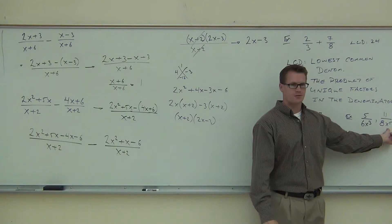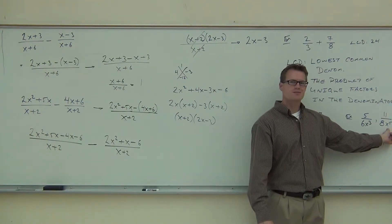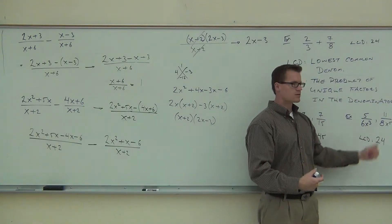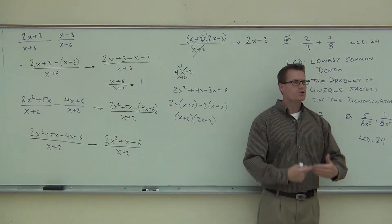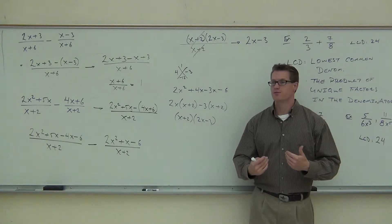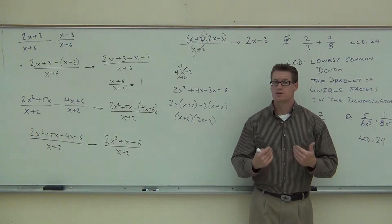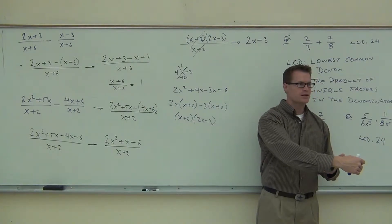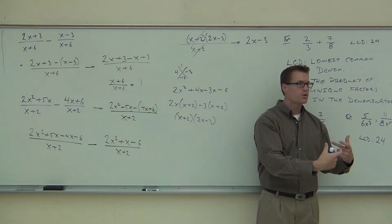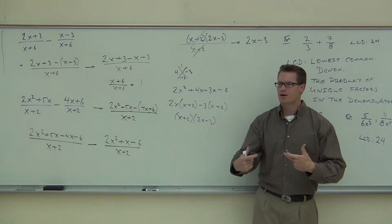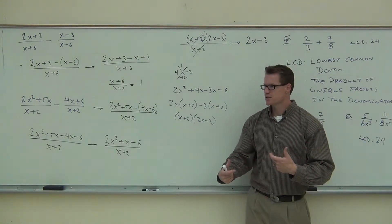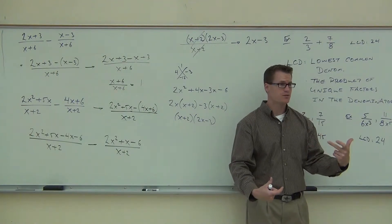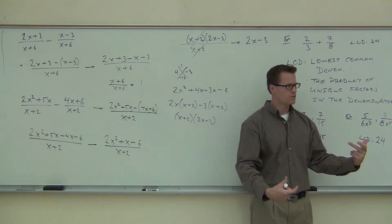Here we have x to the fifth power. They're not different variables — they're both x's. So you go: I have x's here, I've got x's here. Which one has the largest power? X to the fifth. That is your LCD in that case. It's not x to the eighth — you don't need to have both. You just need enough to cover both denominators. Five does it; x to the fifth would do it.